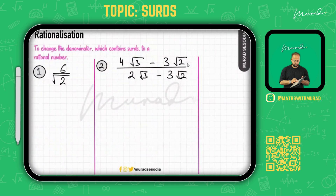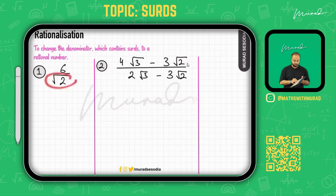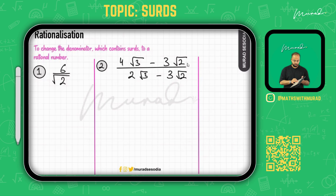Now we move to rationalization. The definition: rationalization is the process of changing a denominator which contains a surd into a rational number. For example, consider 6/√2. The denominator has √2, so we multiply both numerator and denominator by √2.